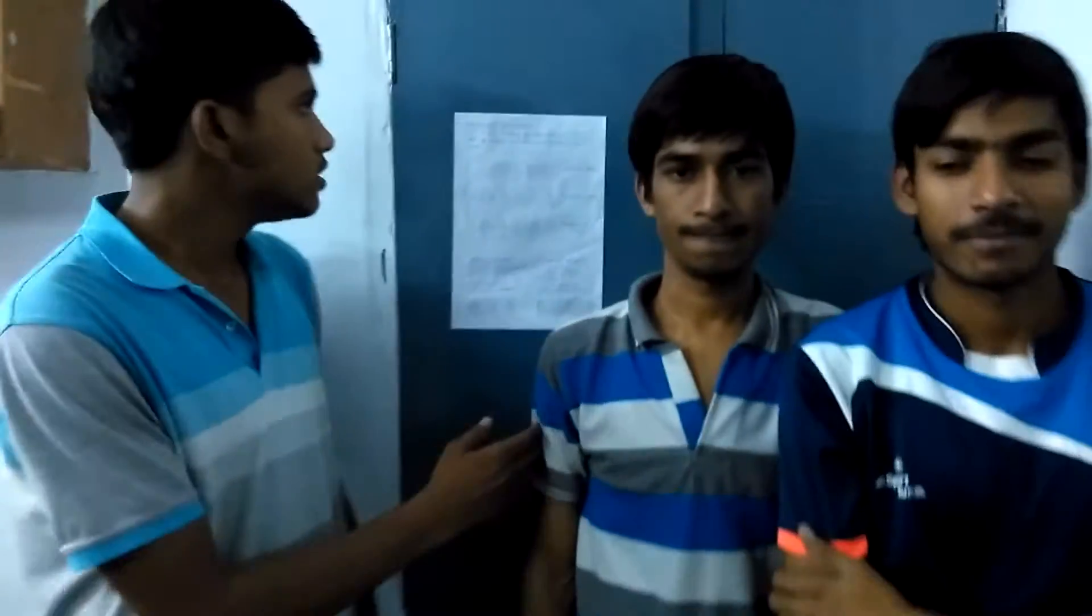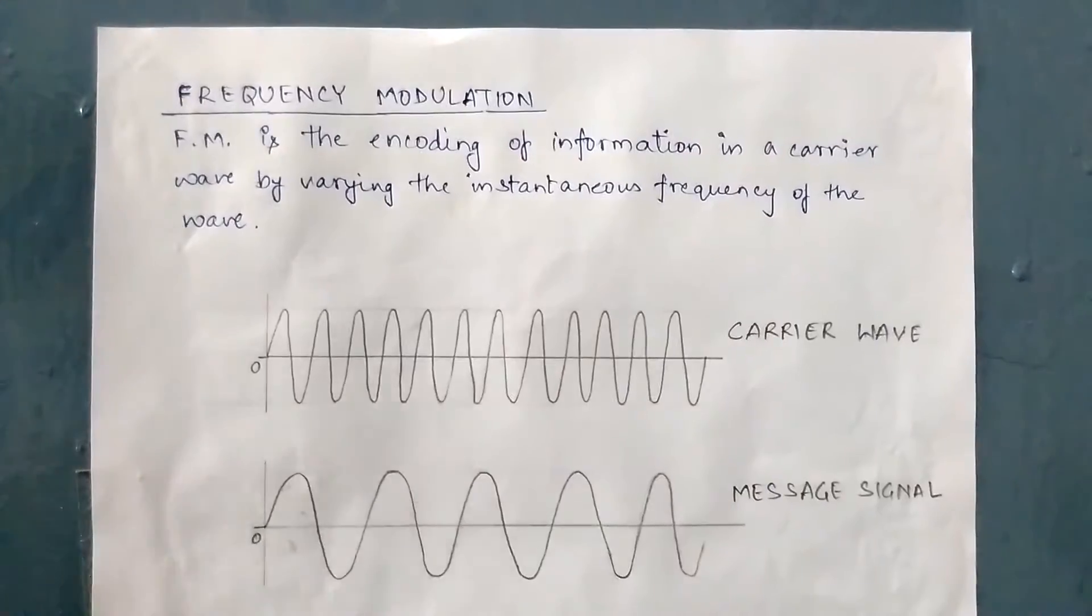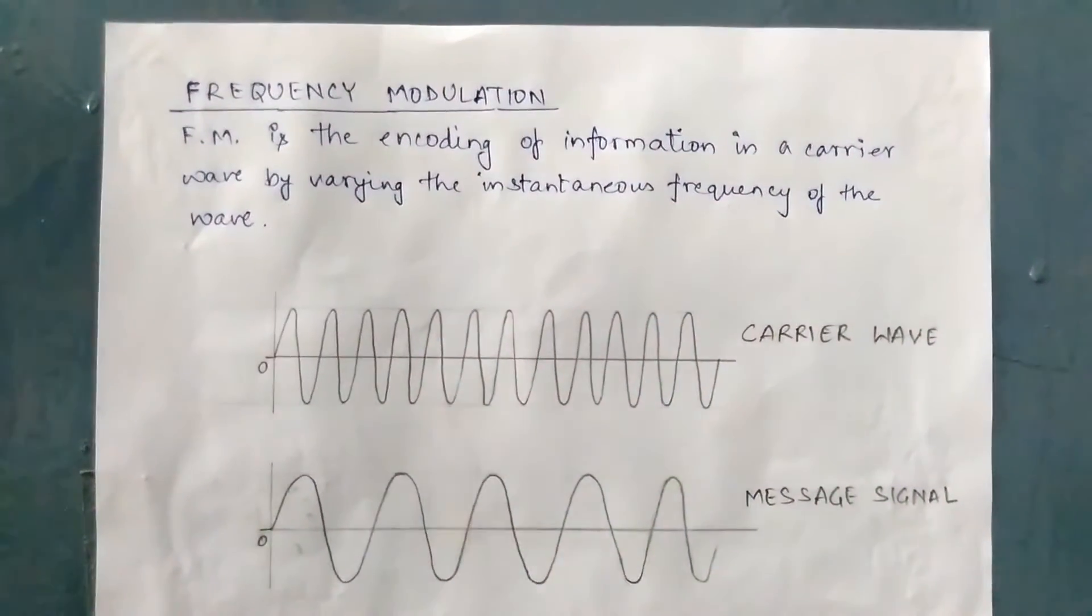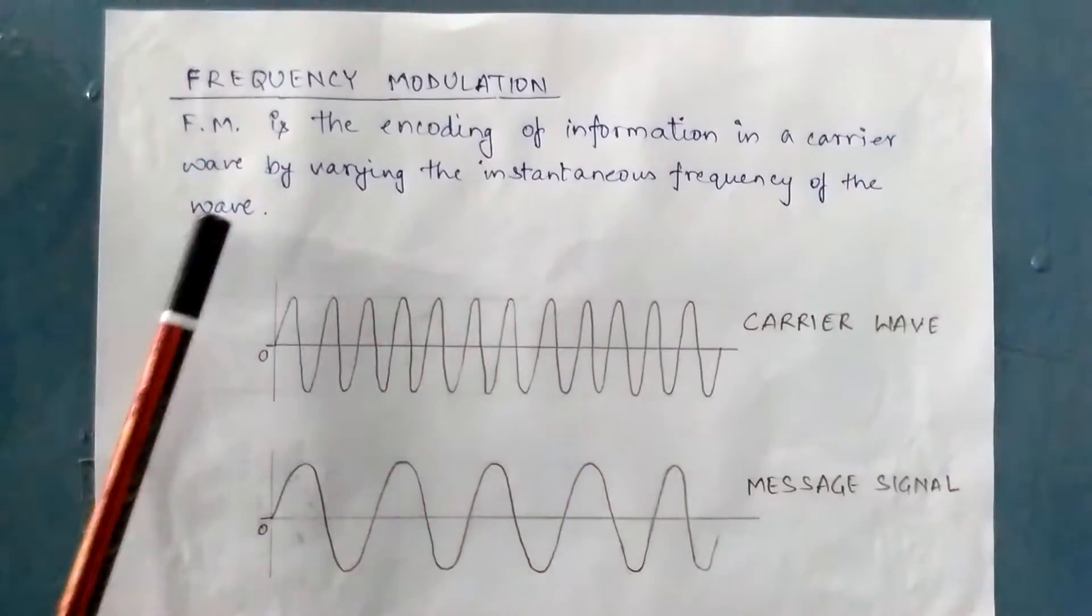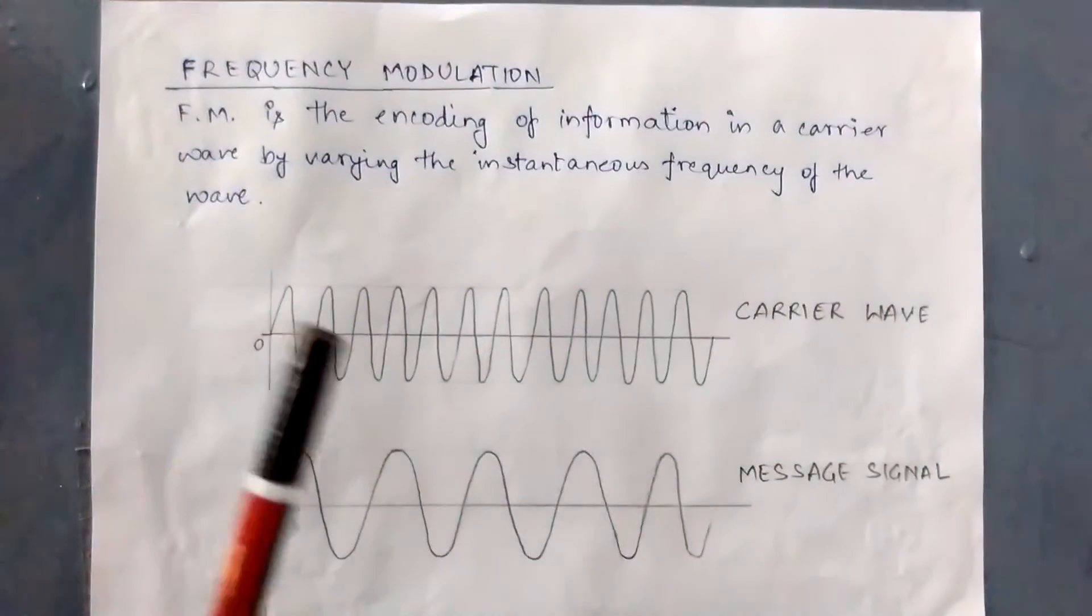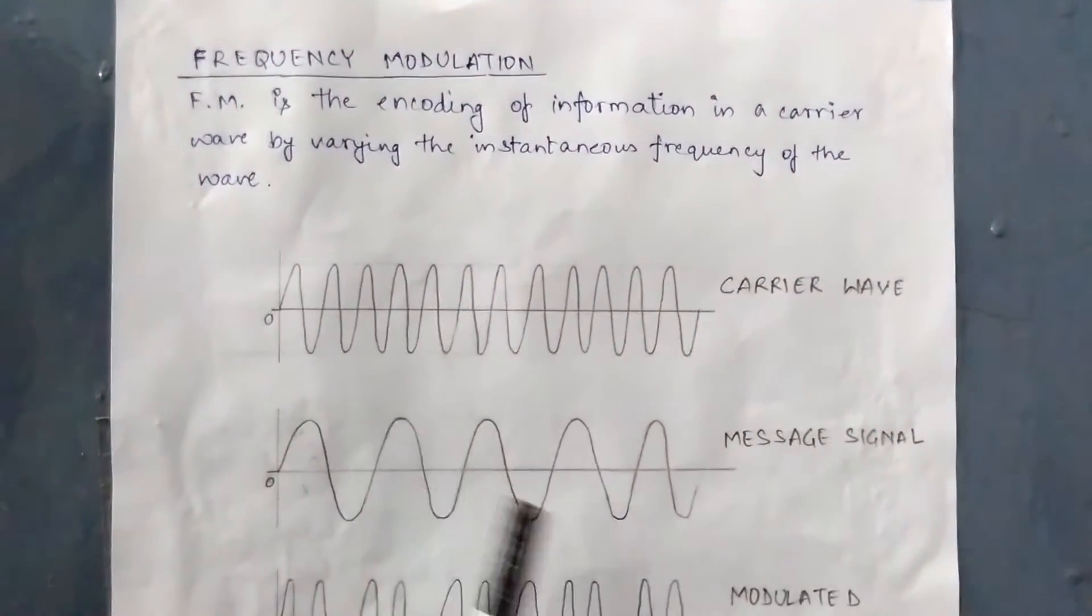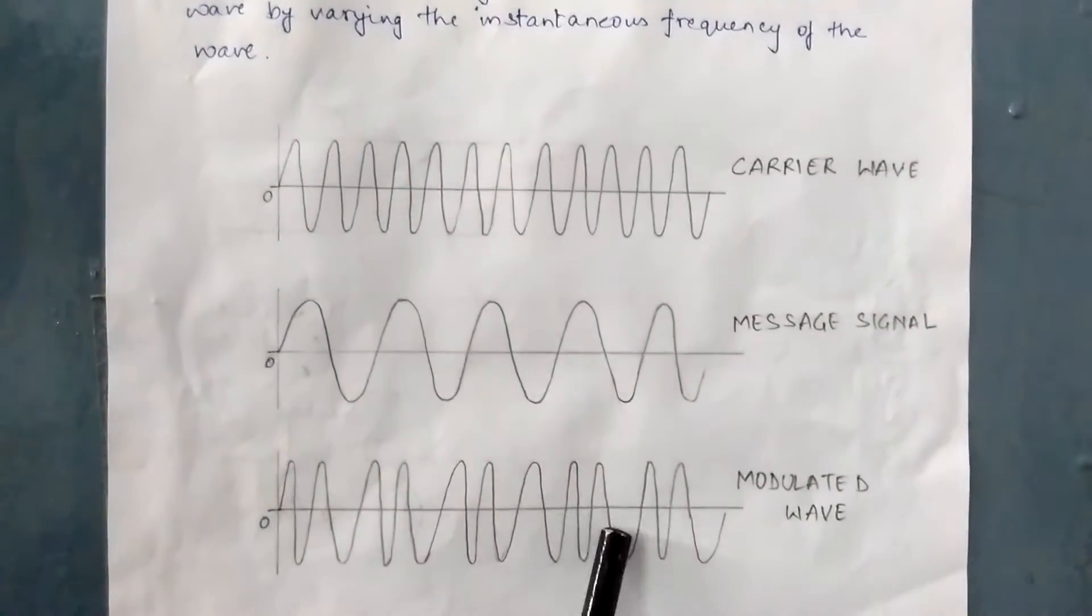First I will teach you about frequency modulation. Frequency modulation is the encoding of information in a carrier wave by varying the instantaneous frequency of the wave. This is my carrier wave, this is my message signal, and this is my modulated wave.